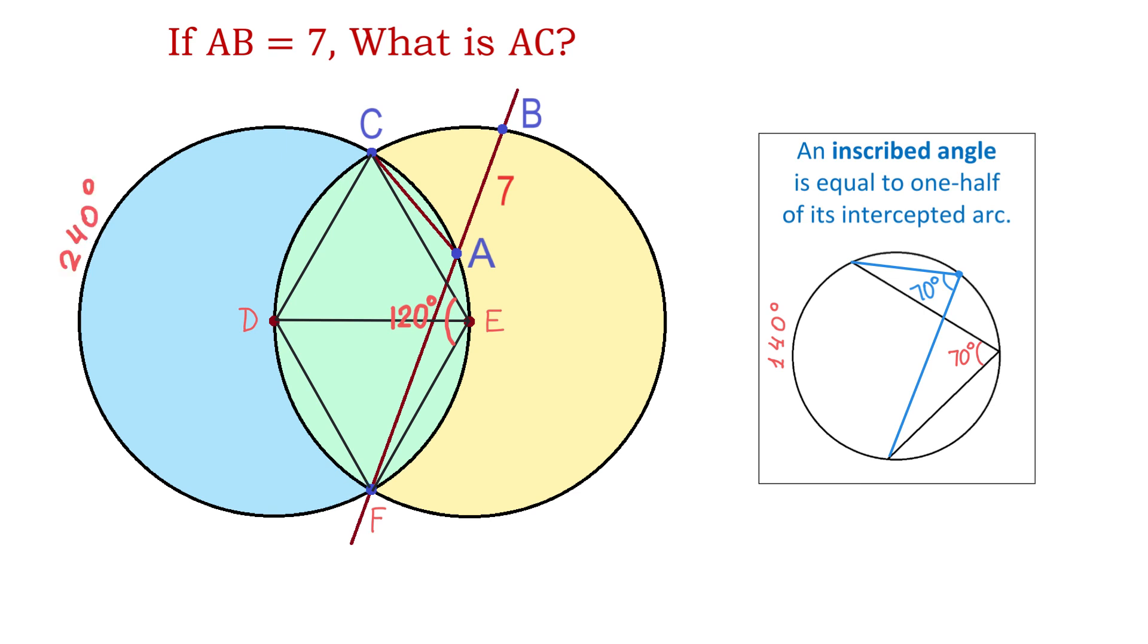Now, let's take a look at the angle CAF. This angle, like the blue angle to the right, is another inscribed angle in the blue circle. And this angle intercepts the same arc, so its measure has to be half of 240, which is 120.